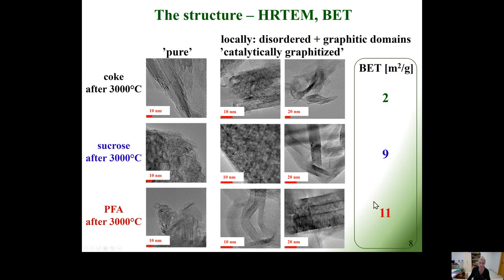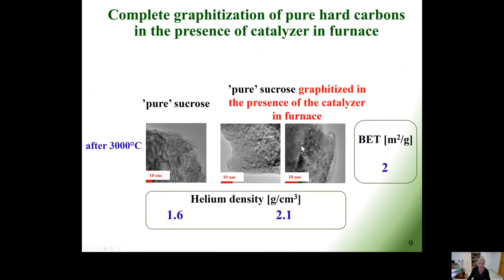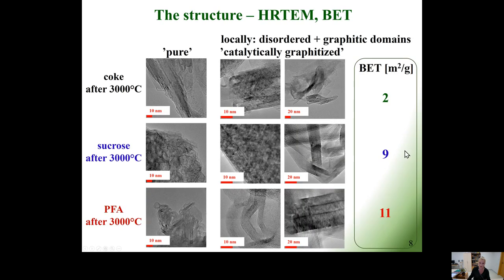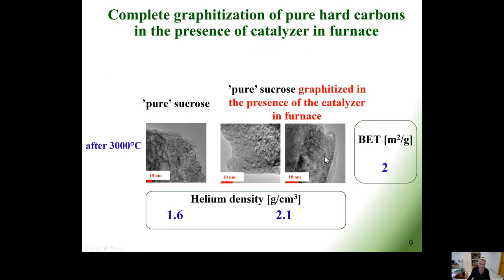This results in higher specific surface area of those materials compared to artificial graphite from coke. However, the surface area can be tuned by selecting the proper catalytic graphitization method and concentration of the catalyst. For comparison, the carbon from sucrose graphitized in the presence of silicon vapor shows a significantly reduced BET area compared to the sucrose sample graphitized with the silicon dopant. The reduction of porosity and surface area is also confirmed by high skeletal helium density of this material, close to the theoretical density of graphite.